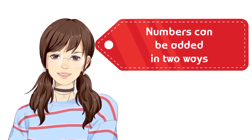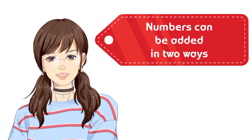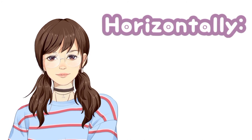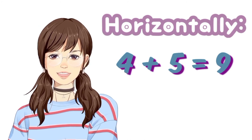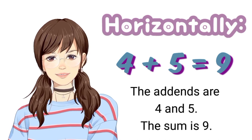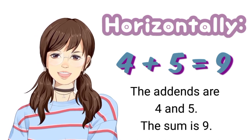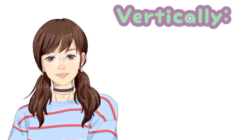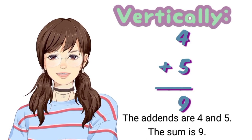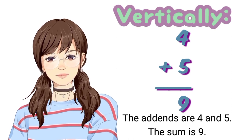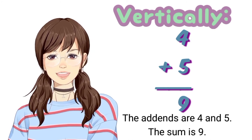Numbers can be added in two ways. Horizontally, 4 plus 5 equals 9. The addends are 4 and 5. The sum is 9. Vertically, 4 plus 5 equals 9. Still, the addends are 4 and 5, and the sum is 9.